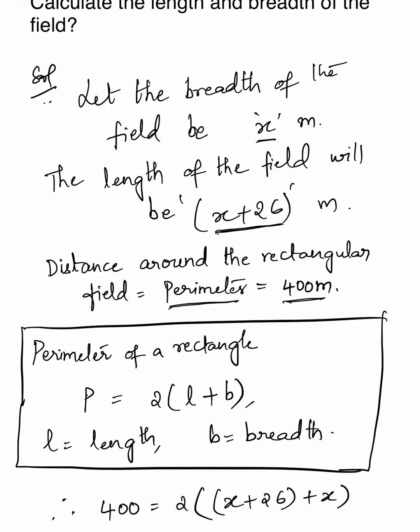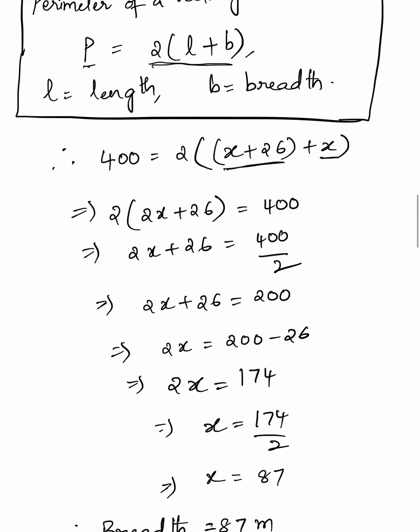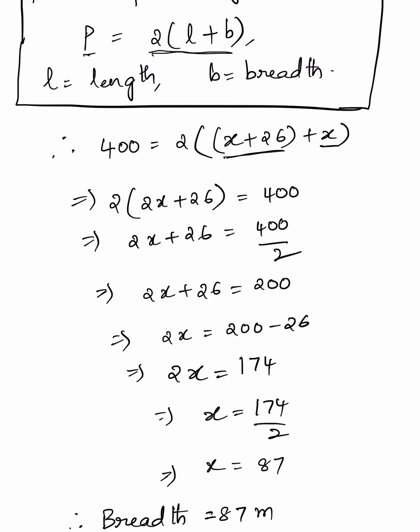The perimeter formula is P equals 2 into (L plus B), where L is length and B is breadth. Therefore, 400 equals 2 into (x plus 26 plus x), which gives 2 into (2x plus 26) equals 400. So 2x plus 26 equals 200, meaning 2x equals 200 minus 26, which is 174. Therefore, x equals 174 divided by 2, so x equals 87.